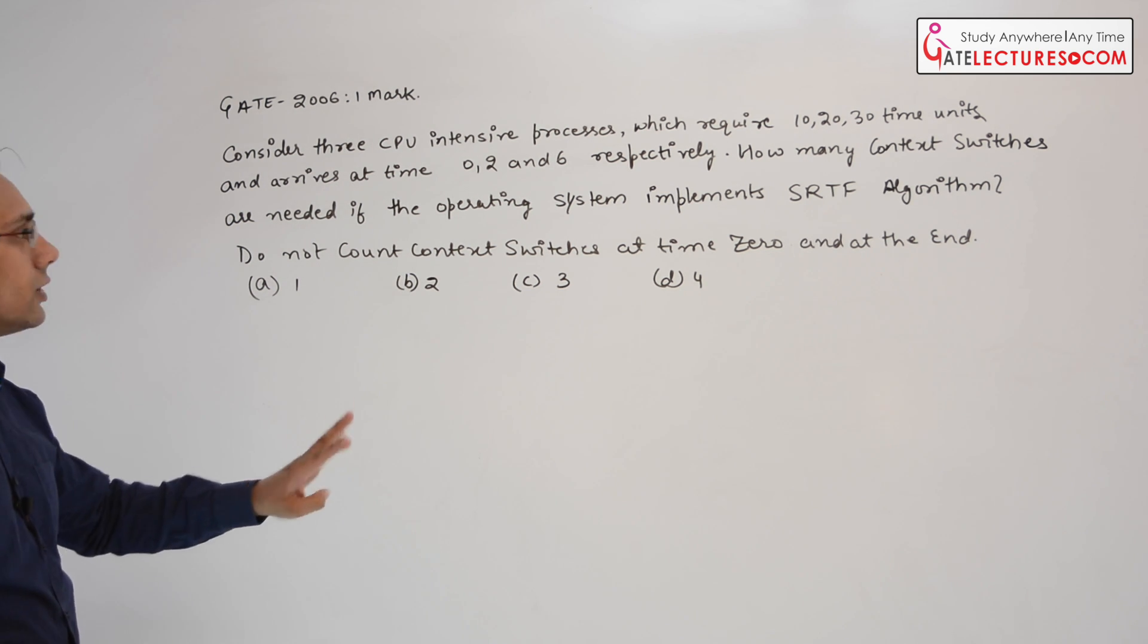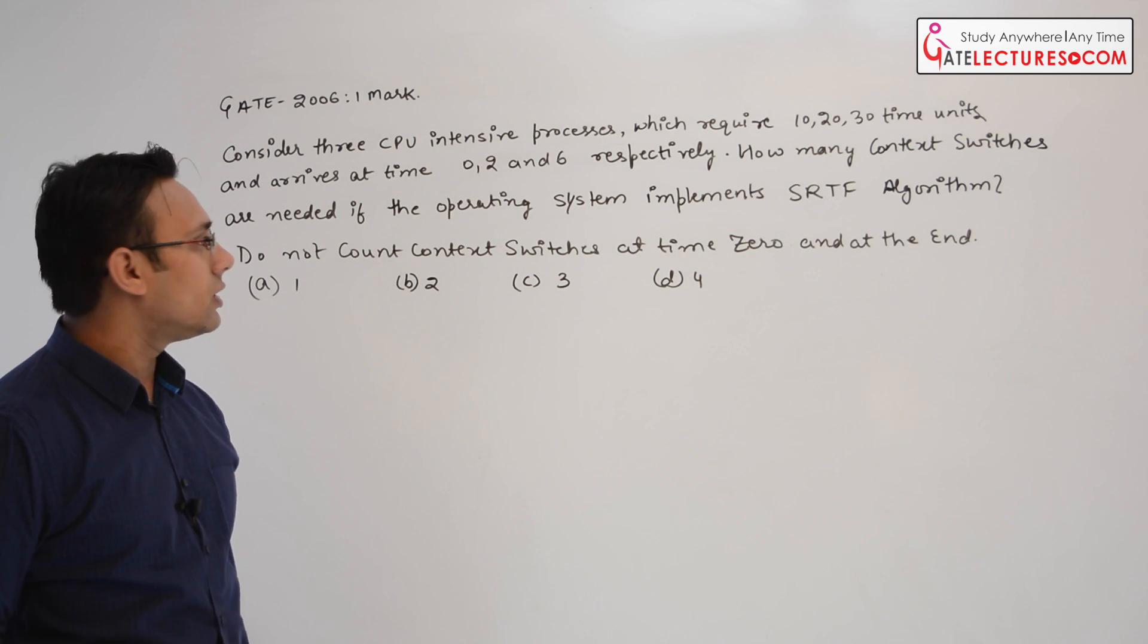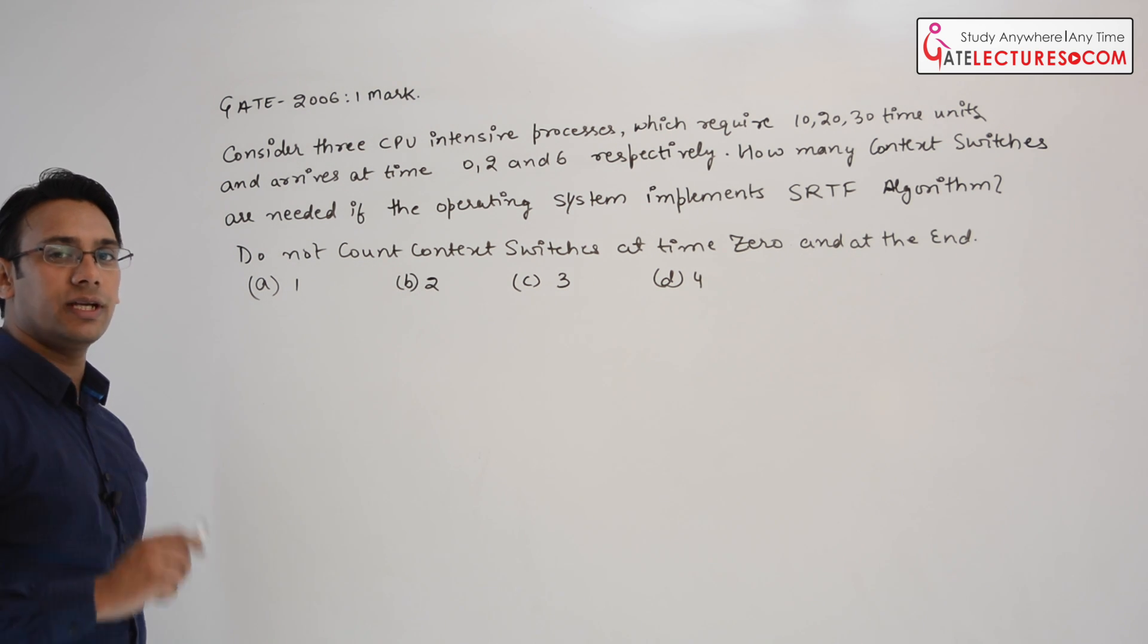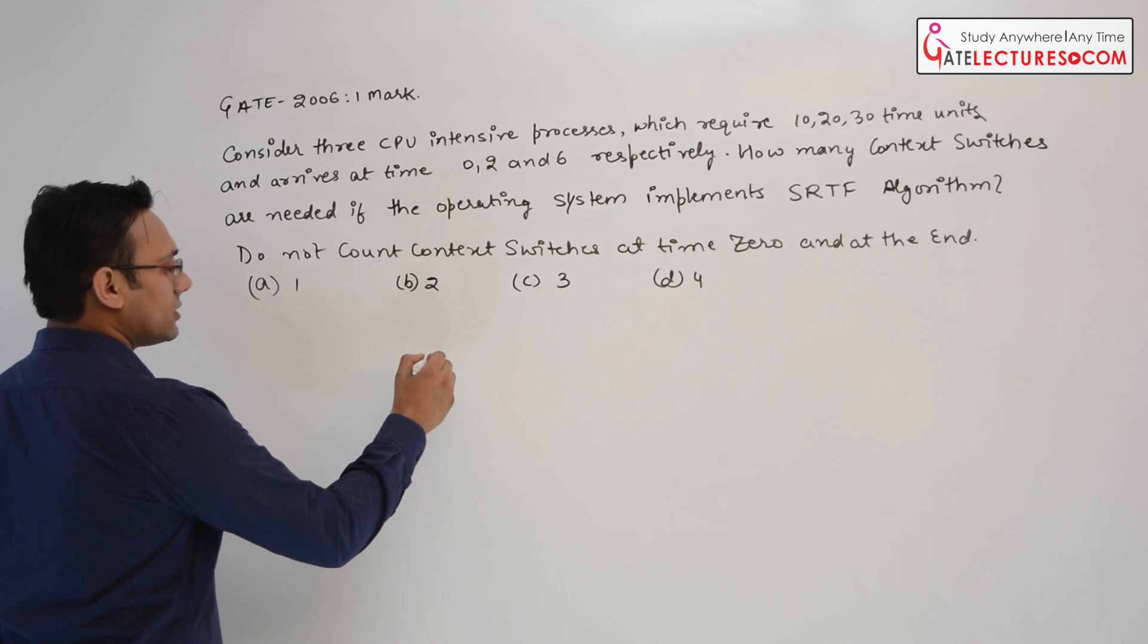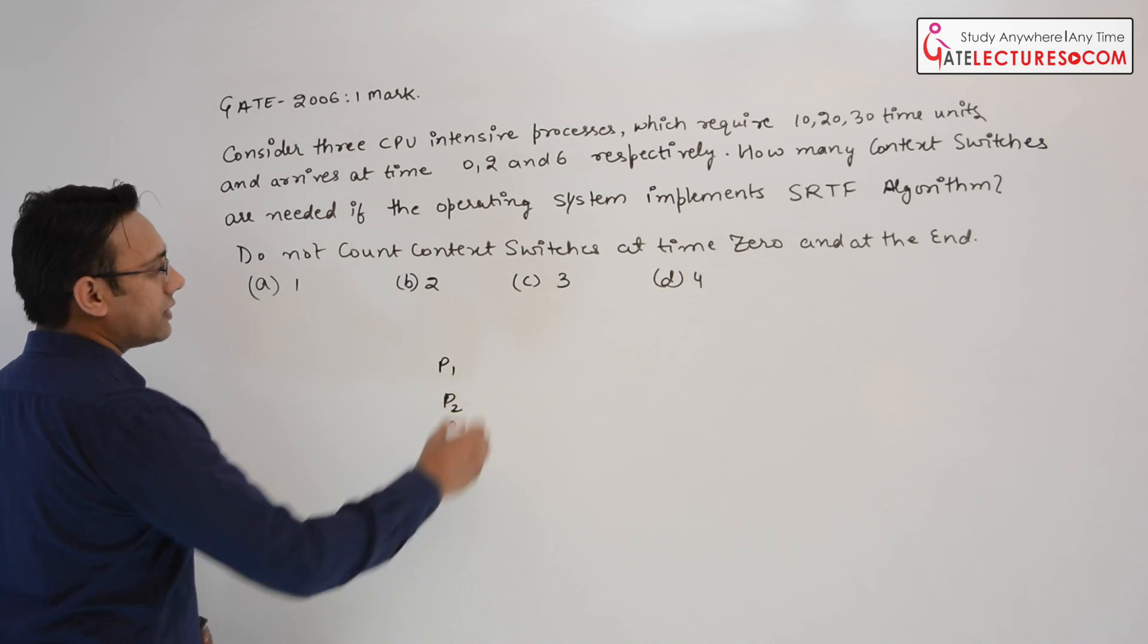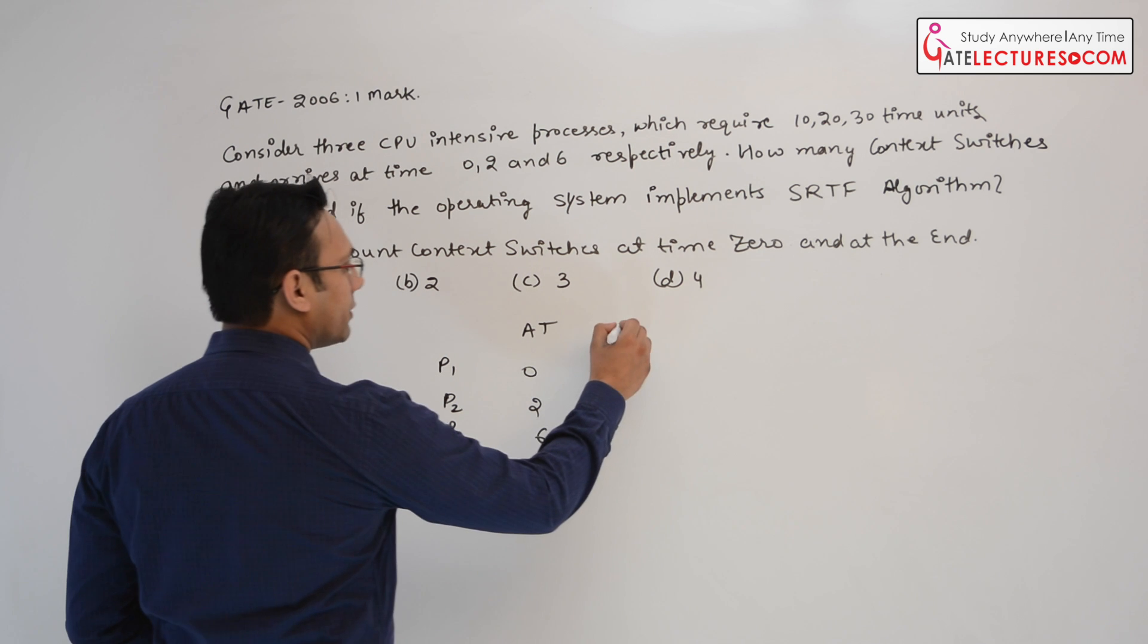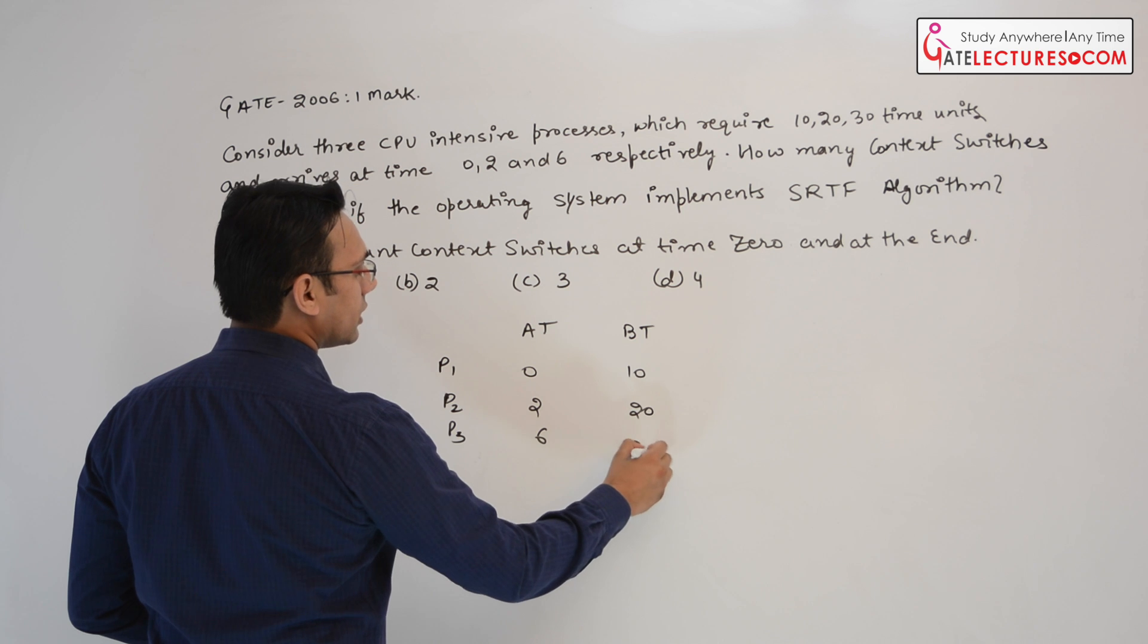They are saying they have three processes with the following burst time and this is the arrival time of each process. Now they are asking how many context switches are needed if the operating system implements shortest remaining time first algorithm. Let me formalize it. Here we have three processes. Assume the processes are P1, P2 and P3. What is the arrival time? It is 0, 2 and 6. What is the burst time? It is 10, 20 and 30.